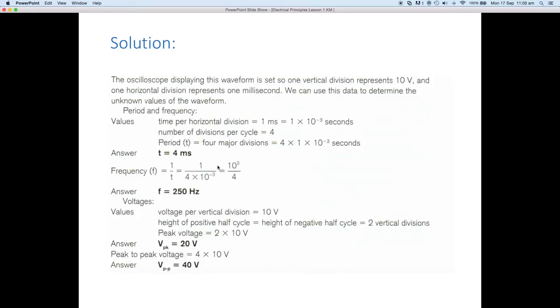So let's have a look at the solution. Our time per division is one millisecond and we've got four of them. So four times one millisecond obviously is four milliseconds. So that's nice and easy. We've got the time base of our wave at four milliseconds. What's its frequency? So f frequency is one divided by t. So one divided by four times ten to the minus three. We punch that into our calculator we should get two hundred and fifty hertz. Fair bit faster than mains frequency.